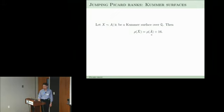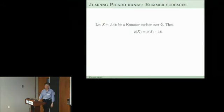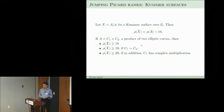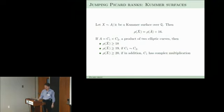Let's investigate this for Kummer surfaces, even though for our applications we need Picard rank 2. For Kummer surfaces you keep the Picard rank of the abelian surface you started with, plus 16 from blowing up the fixed points. For a product of two elliptic curves you get Picard rank at least 18 (one plus one plus 16). If the curves are isogenous you get at least 19; if in addition you have complex multiplication you reach 20. You get 22 if you have supersingular reduction.